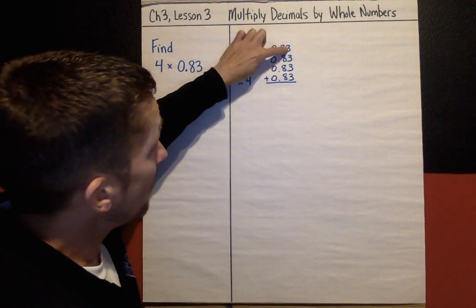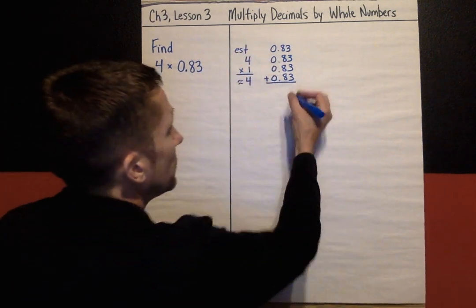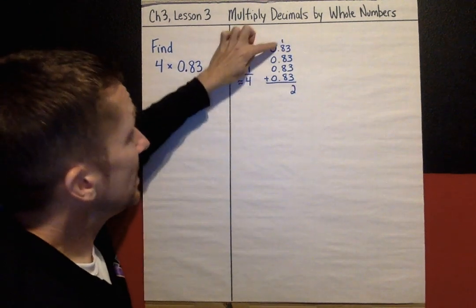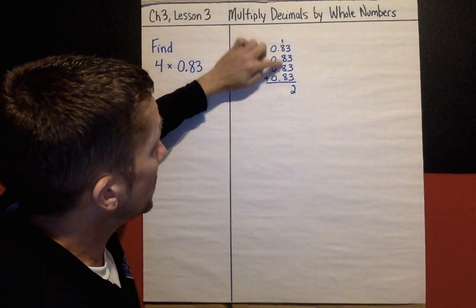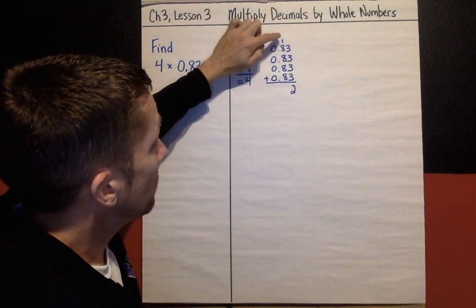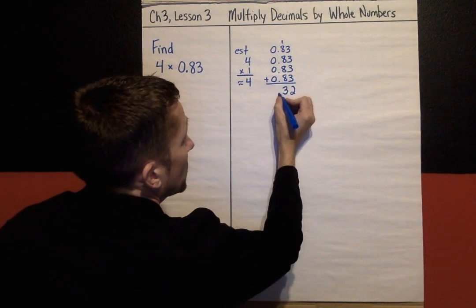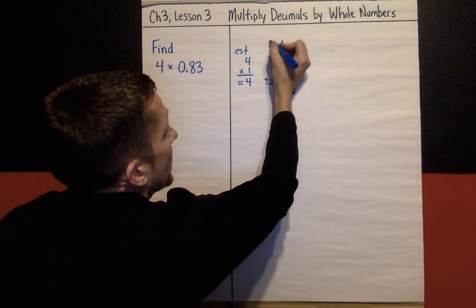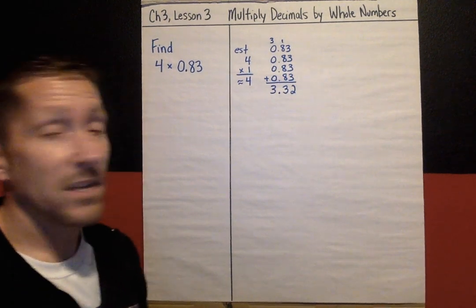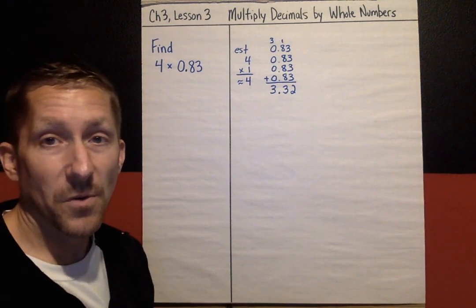I could add all these 3s. 3 and 3 is 6, 9, 12. Carry the 1. And then we've got 4 8s, which is 8 and 8 is 16, 24 is 32, plus 1 is 33. So I'm going to put 3 here, my decimal comes straight down and carry the 3, and then I wind up with 3.32. And that fits my estimate. 3.32 is pretty close to 4.